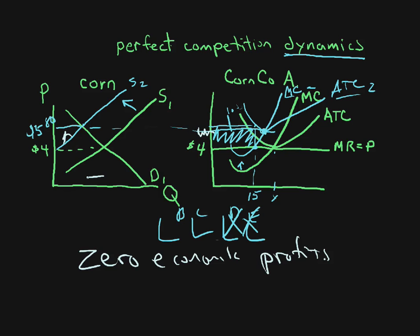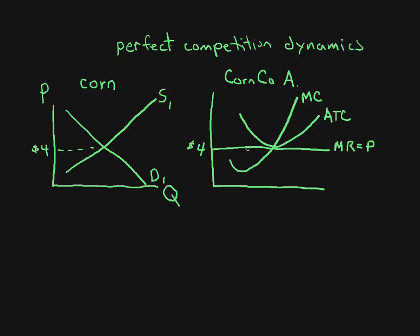Always, always in the long run you end up at zero economic profits. In this case those zero economic profits are up here. The price has definitely gone up as expected, but output has gone down because there are fewer companies in this market. We have costs going up, companies dropping out, supply shifts to the left, and we end up back at zero economic profits.